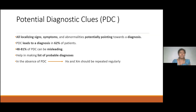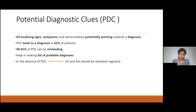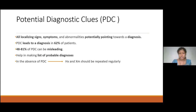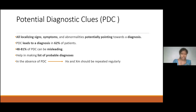Potential diagnostic clues are all localizing signs, symptoms, and abnormalities which potentially point toward the diagnosis. In PUO cases, around 62% of cases, these clues will lead to a diagnosis. However, if we take a single clue, it may mislead us 48% to 81% of the time. The important point is that potential diagnostic clues help us make a probable list of diagnoses. If we don't have diagnostic clues, we should repeat history and examination regularly, because sometimes new symptoms and signs appear, or previously ignored findings now gain significance.